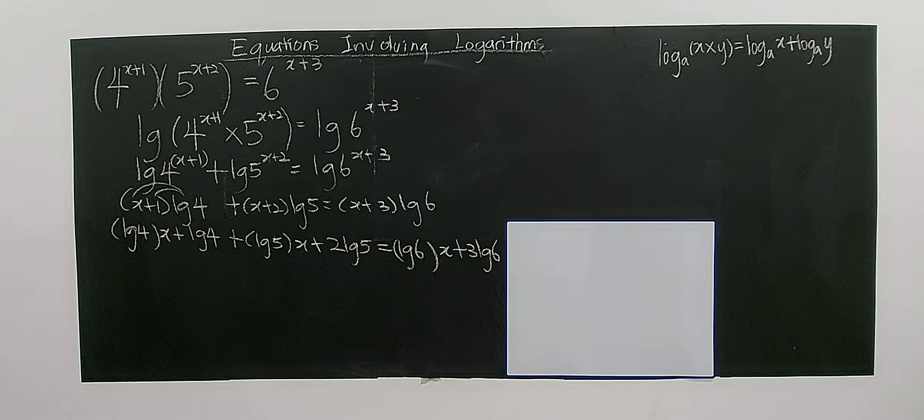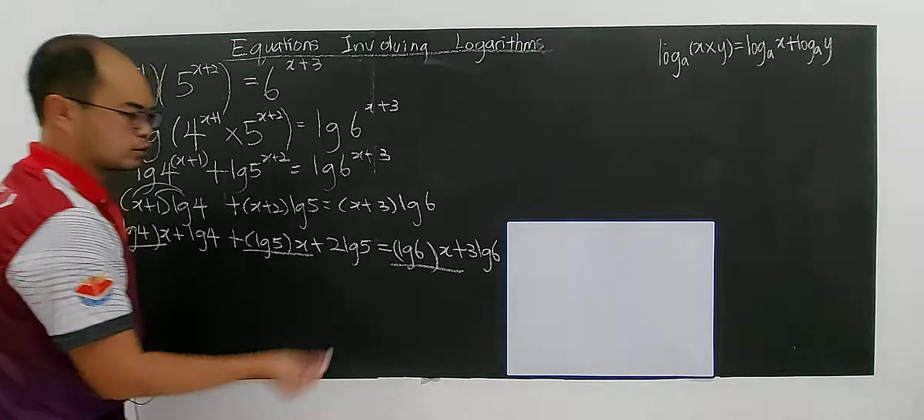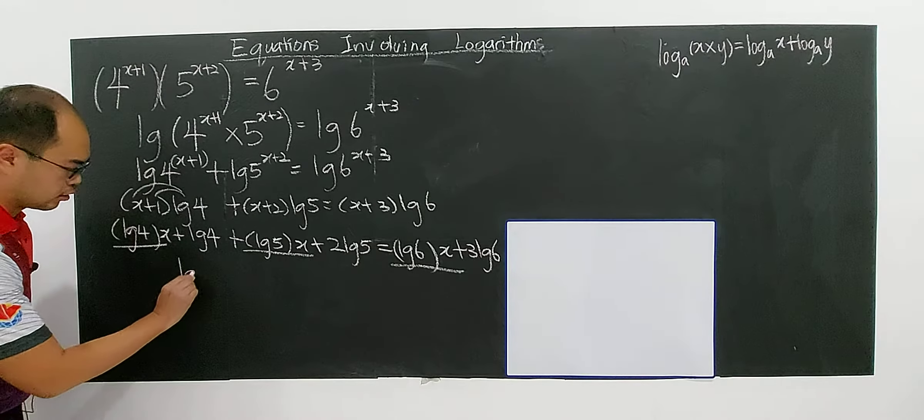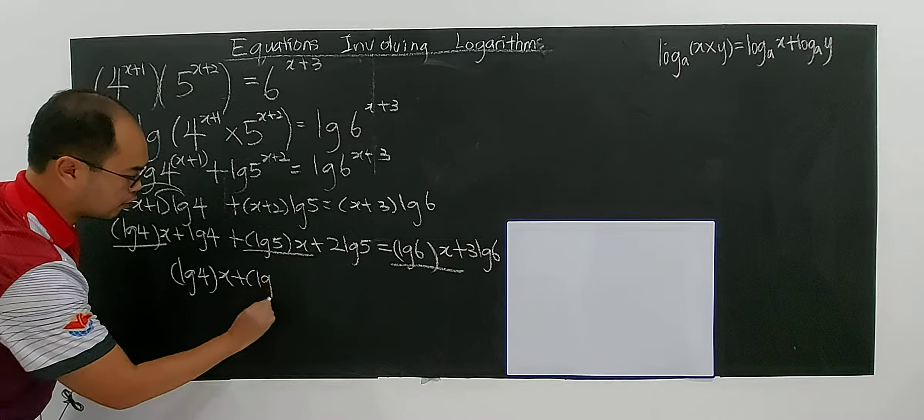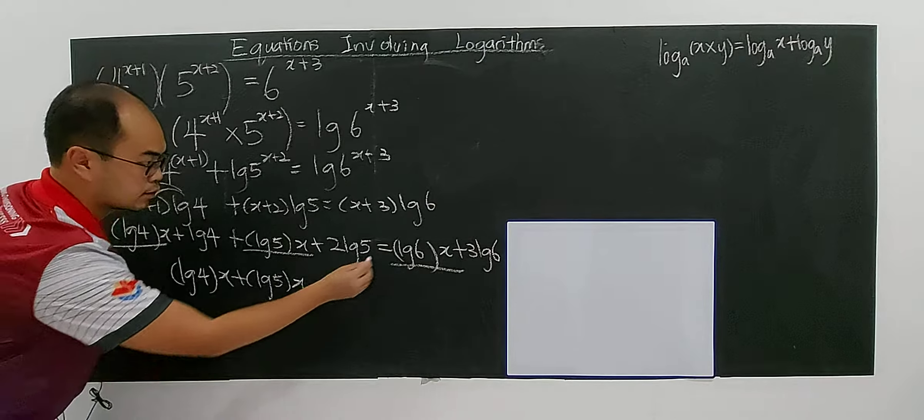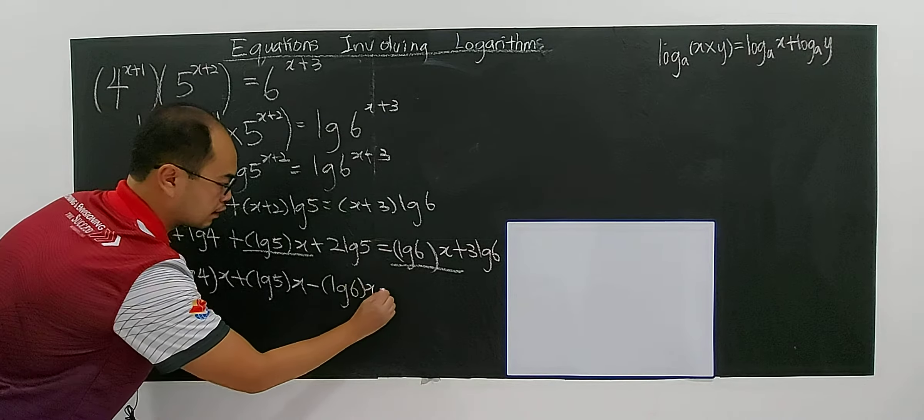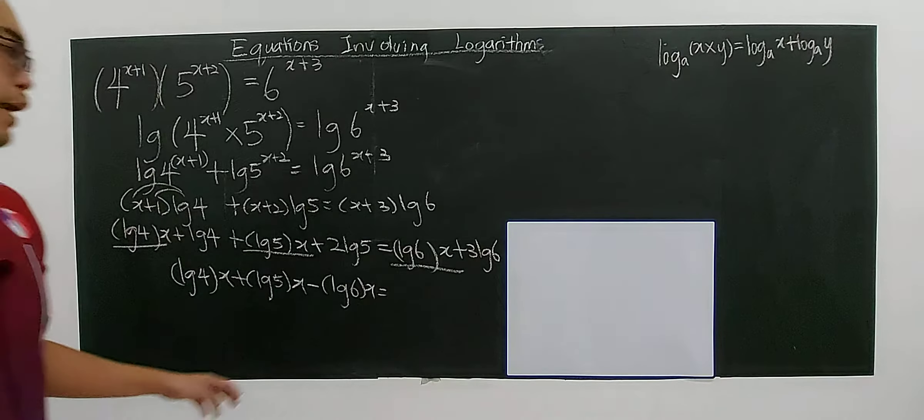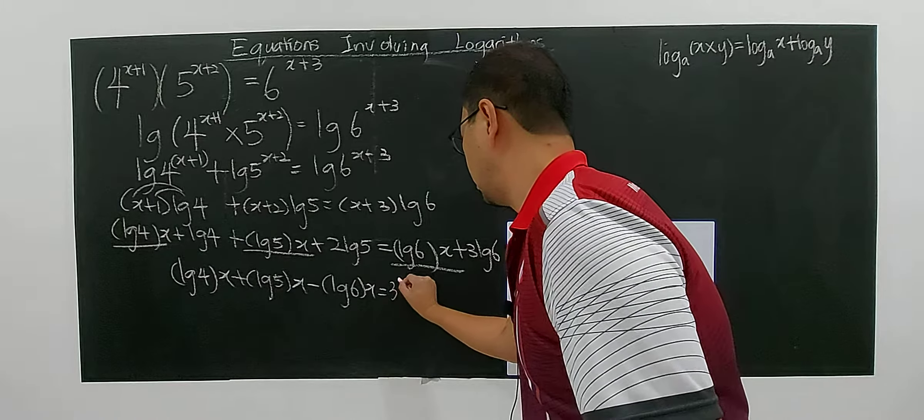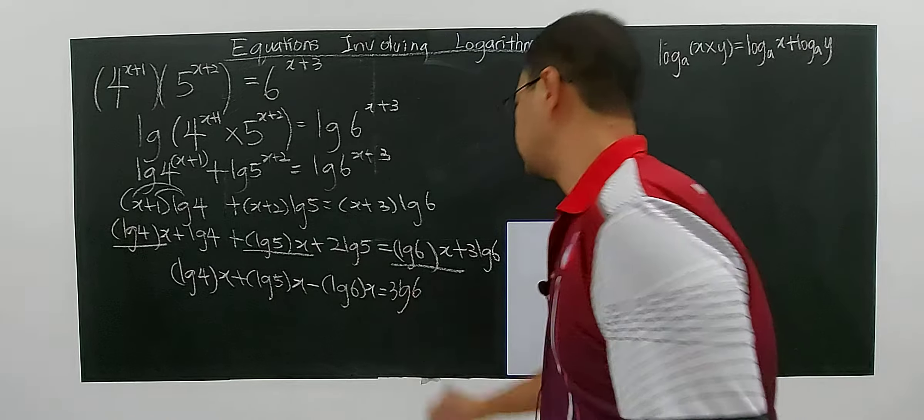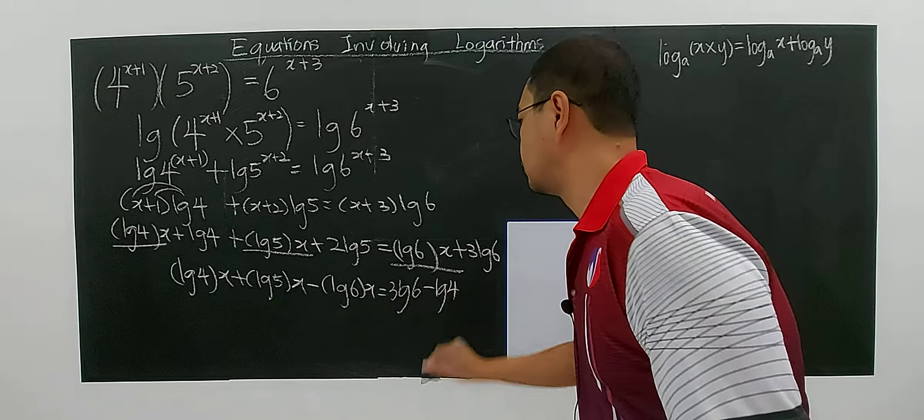Group the terms with x on the left side: log4·x + log5·x - log6·x equals the numbers without x on the right side: 3log6 - log4 - 2log5. This becomes a group of numbers on the right.